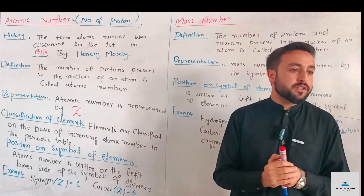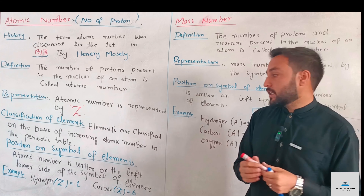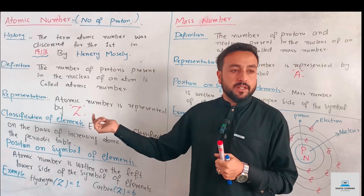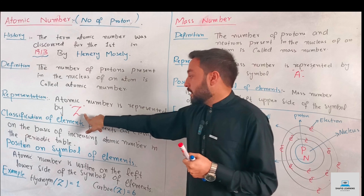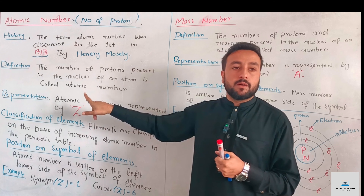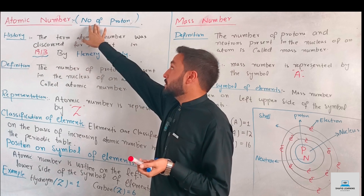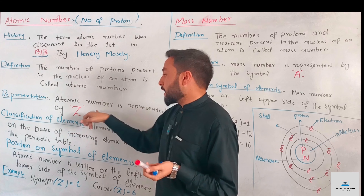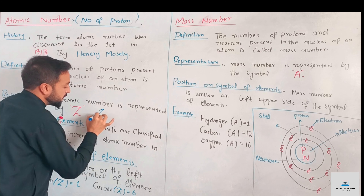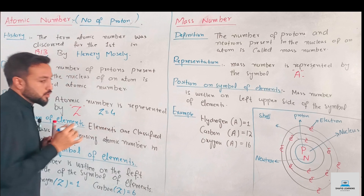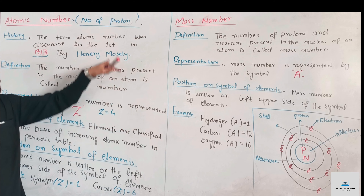The atomic number is represented by the symbol Z. The atomic number is also called the proton number, because it equals the number of protons in the atom.